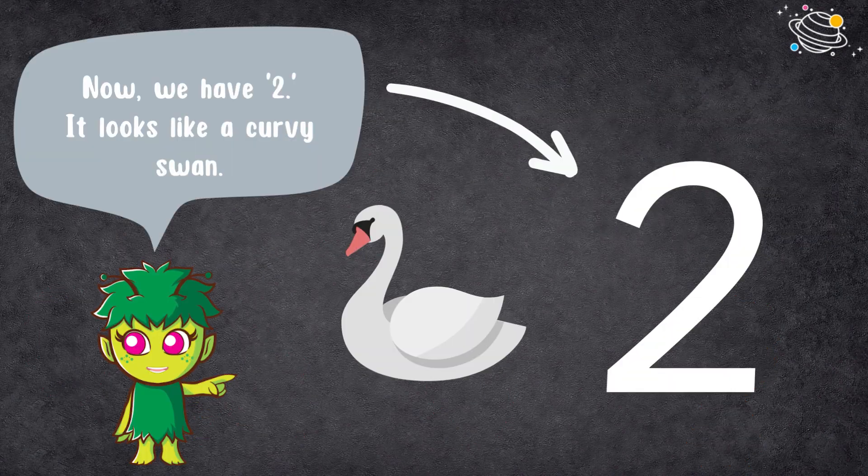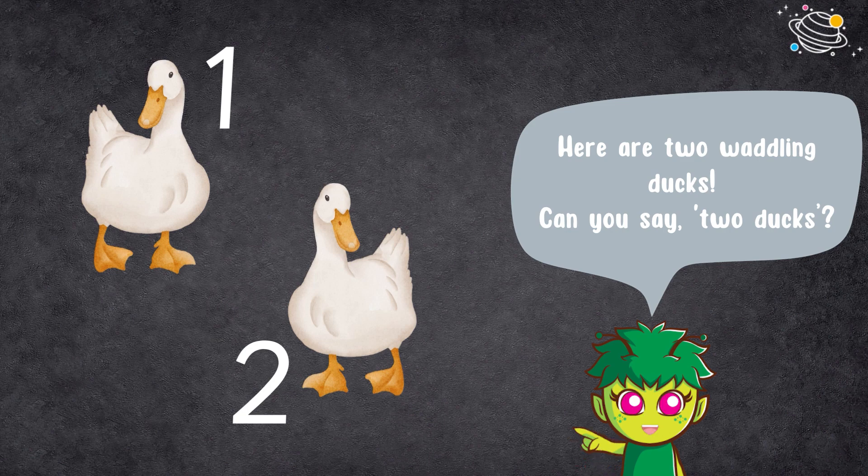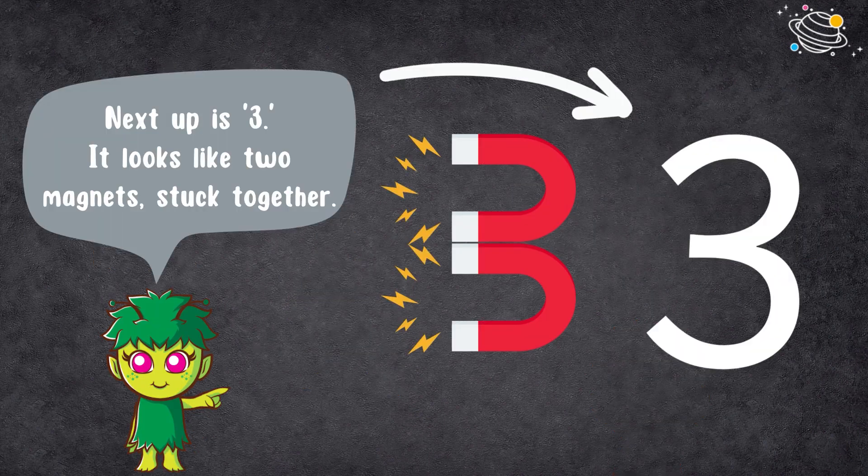Now we have two. It looks like a curvy swan. Let's say two together. Here are two waddling ducks. Can you say two ducks? Next up is three. It looks like two magnets stuck together.